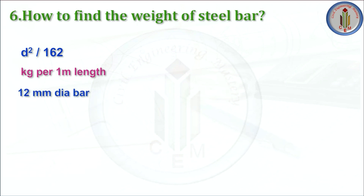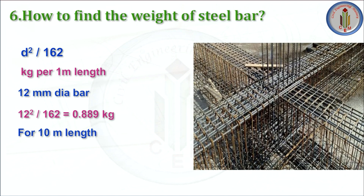Let me show you one example. Consider a 12 mm diameter bar: 12² / 162 = 0.889 kg per meter length. For a 10-meter length bar, that gives 8.89 kg. This is how we calculate the weight of the steel bar. Similarly, we have many different diameter bars like 8 mm, 10 mm, 16 mm, 20 mm. Whatever diameter we have, we apply it in the formula — substituting the actual diameter in place of d.